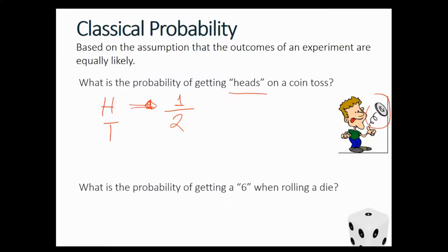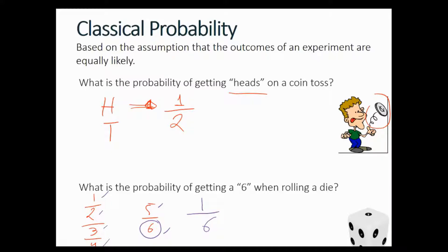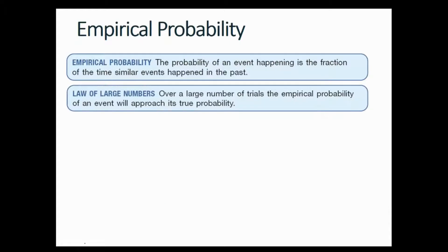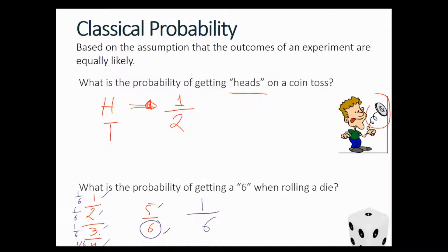When rolling a die, you can get a one, two, three, four, five, or six — six different outcomes, any of which is equally likely. If we're looking for a six specifically, there is only one six out of six possible outcomes, so the probability is 1/6. This is the same for all six numbers: each has probability 1/6, and when you add them all you get 6/6, which equals 1.